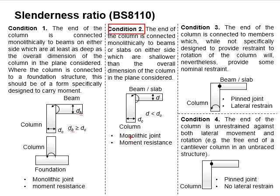Condition 2 refers to a monolithic joint which is moment resistant, but the thickness of the beam or slab is less than the width of the column. The degree of rigidity is not as good as Condition 1.